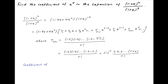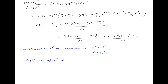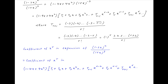Now, the coefficient of x raised to the power r in the given expression (1 minus 2x) whole square divided by (1 plus x) whole cube is therefore equal to the coefficient of x raised to the power r in (1 minus 4x plus 4x square) times, in brackets, t1 plus t2·x plus t3·x square plus and so on, plus t_{r-1} times x raised to the power r minus 1, plus t_r times x raised to the power r, plus and so on.